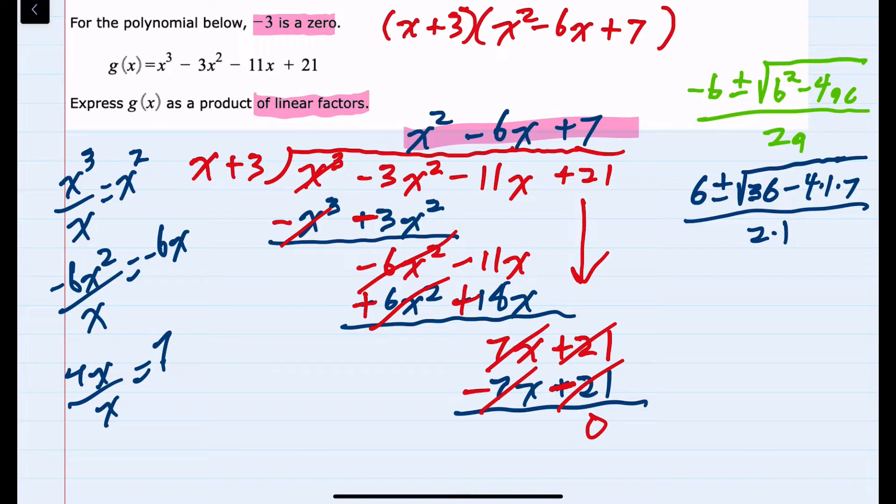So as we start to simplify this, we can see we have 6 plus or minus the square root of 36 minus 4 times 1 times 7 is minus 28 over 2 times 1 is 2.